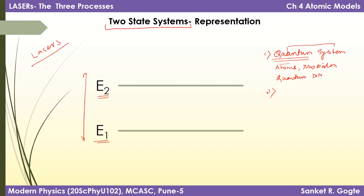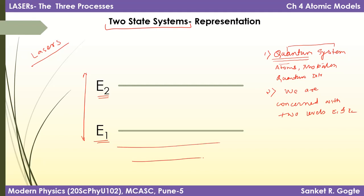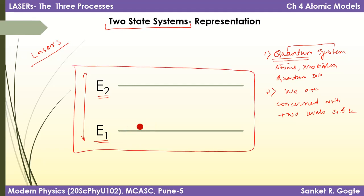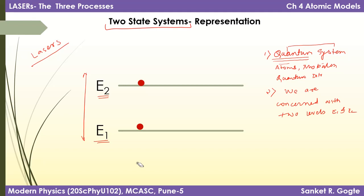Having two energy levels E1 and E2 does not mean these are the only two energy levels in the system. What it means is we are concerned with E1 and E2 out of all the rest. A dot in the diagram represents one system in energy state E1 or E2. When you see a diagram with two dots, it means we have two quantum systems — the first in state E1 and the second in state E2.